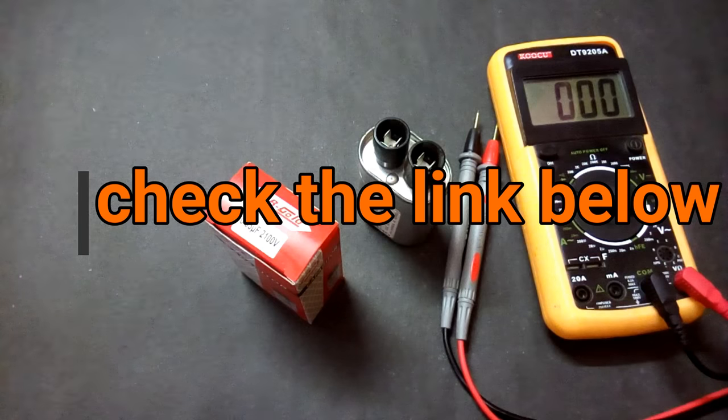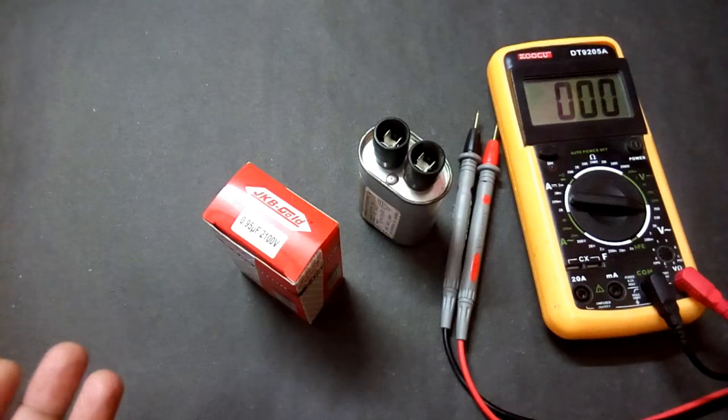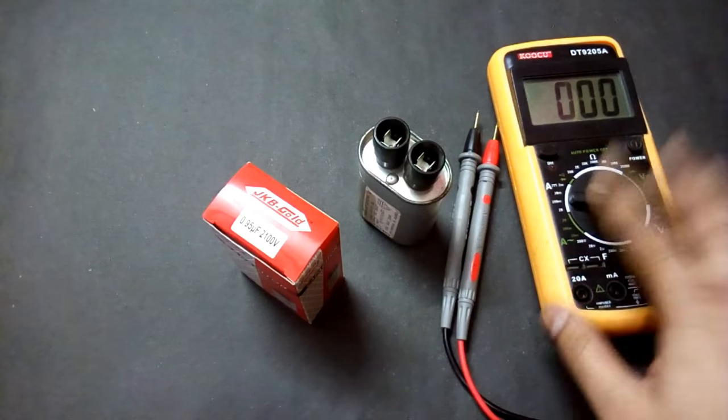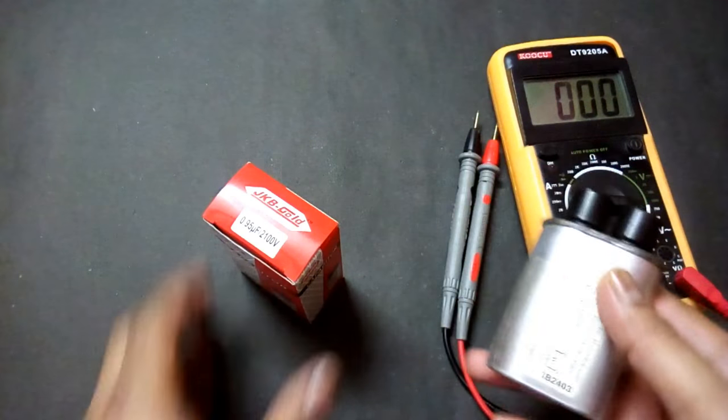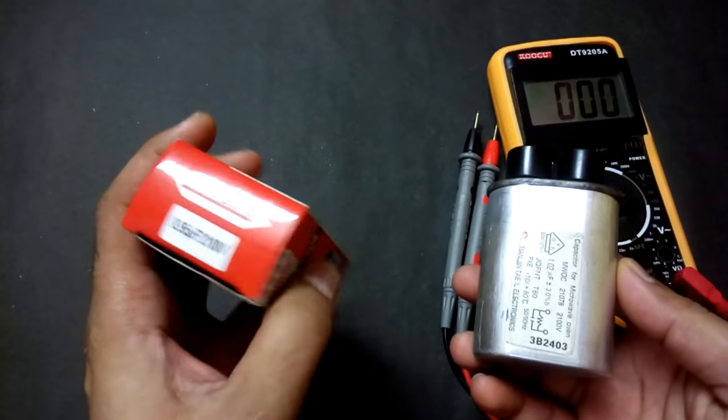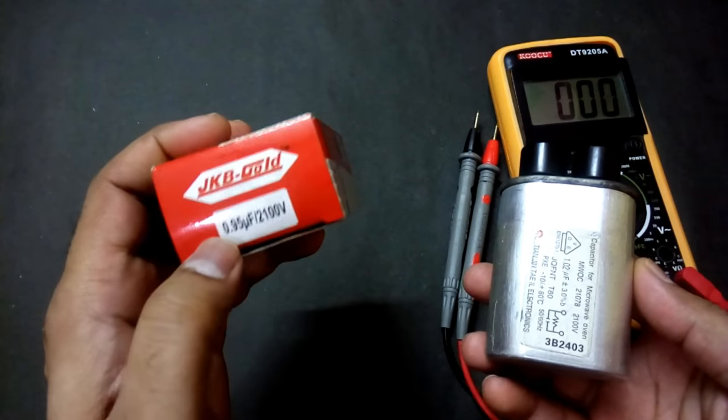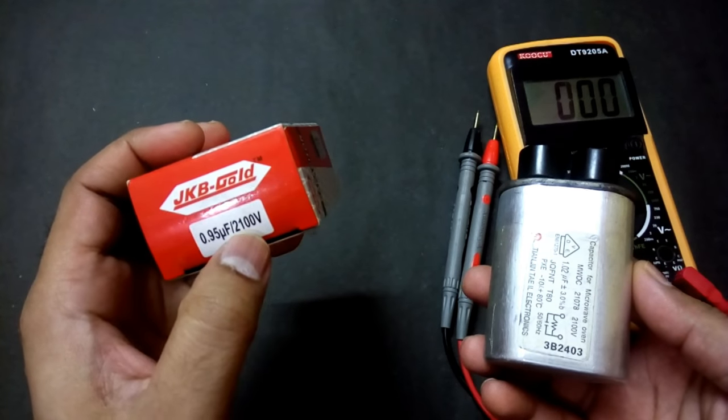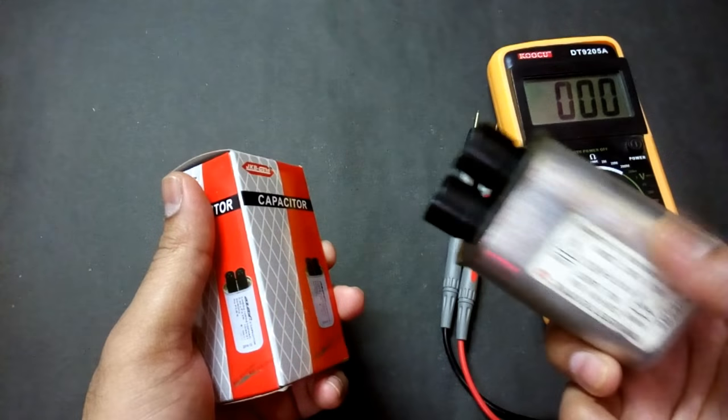Hey what's up YouTube, welcome back. It's TechnoBoy and in this video I'm going to show you how to test a microwave capacitor using a multimeter. Here we have two capacitors. This is the new one, it's from JKB Gold, 0.95 microfarad, 2100 volt capacitor. And this is the old one, 1.02 microfarad and 2100 volt.